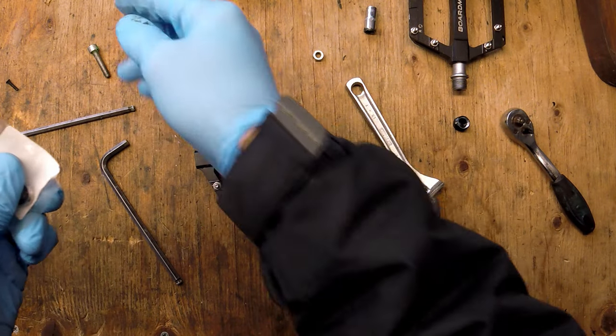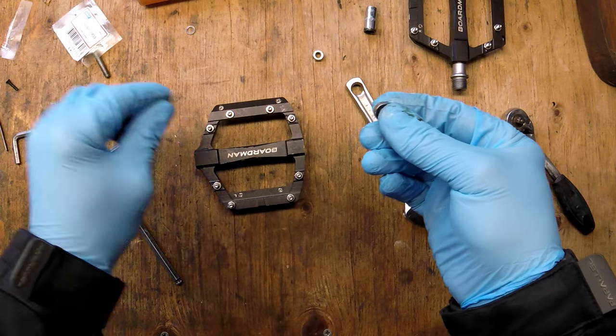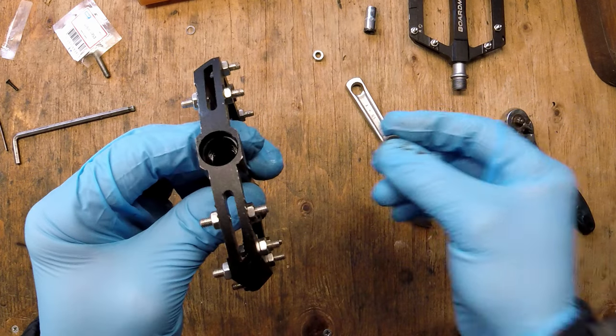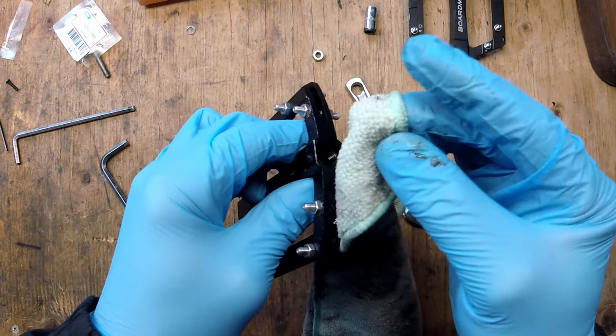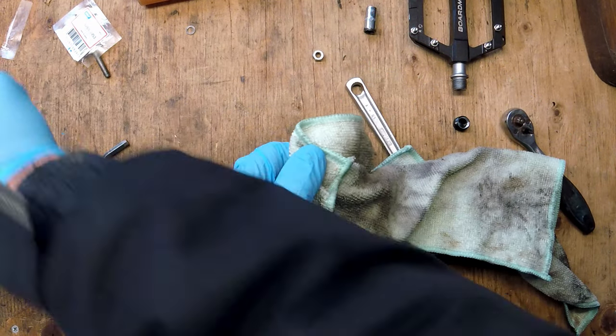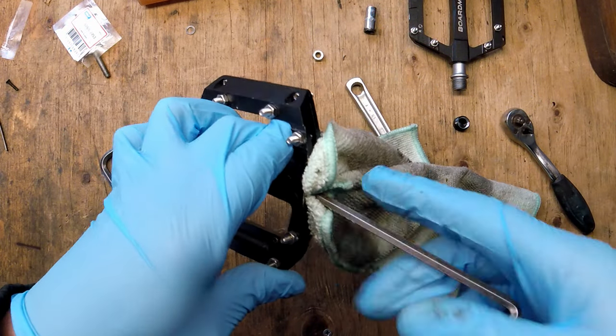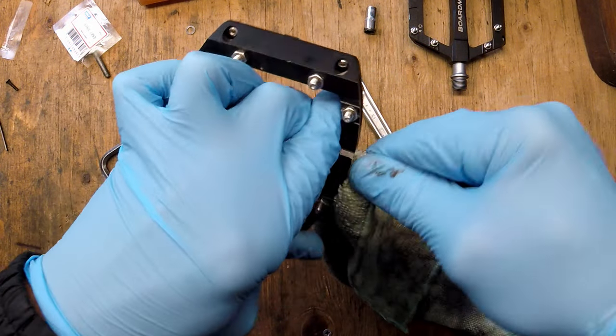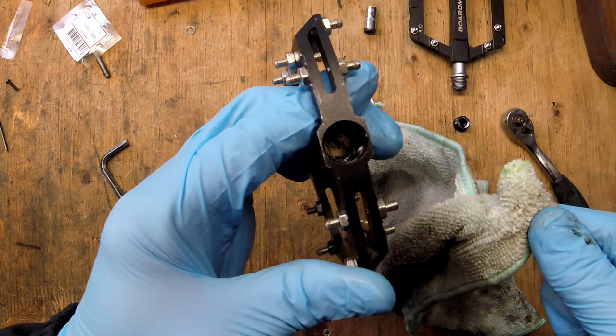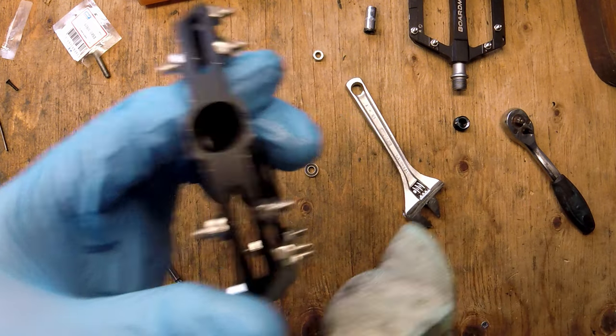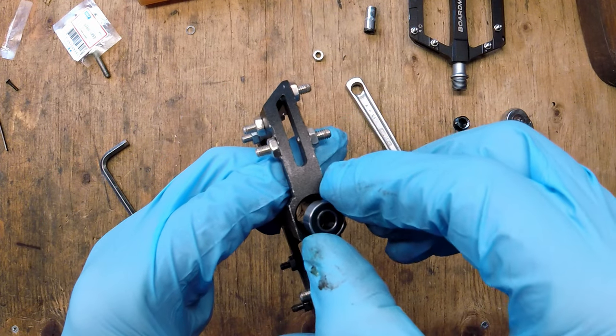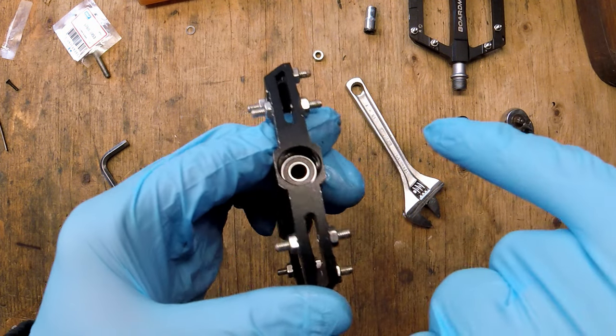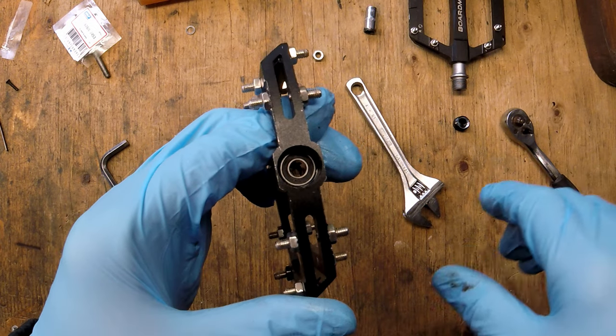So just get the new bearing out. I'm going to give that a clean in there. Just get an old rag. Put it on the allen key. Give it a quick clean out in there. Just so the bearing's got somewhere nice to sit. You can see in there now. And I'm going to put the new bearing in place. And just get it so it's ready to sit in.